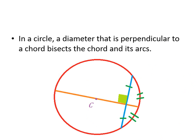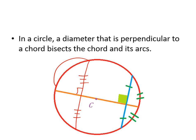In a circle, a diameter that is perpendicular to a chord will always bisect that chord and also the arc that is created. So if you draw a diameter and then a chord that is perpendicular to it, it's going to bisect that chord. If I drew another chord on this side and said this was 90 degrees, that chord would have to be bisected — each side would be congruent. And the arc is also bisected, so this arc is equal to that arc.